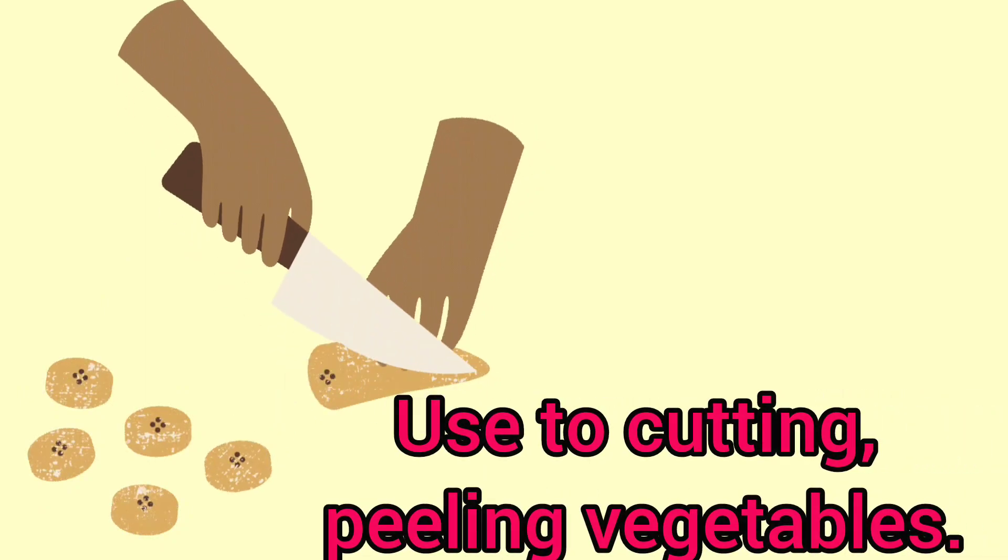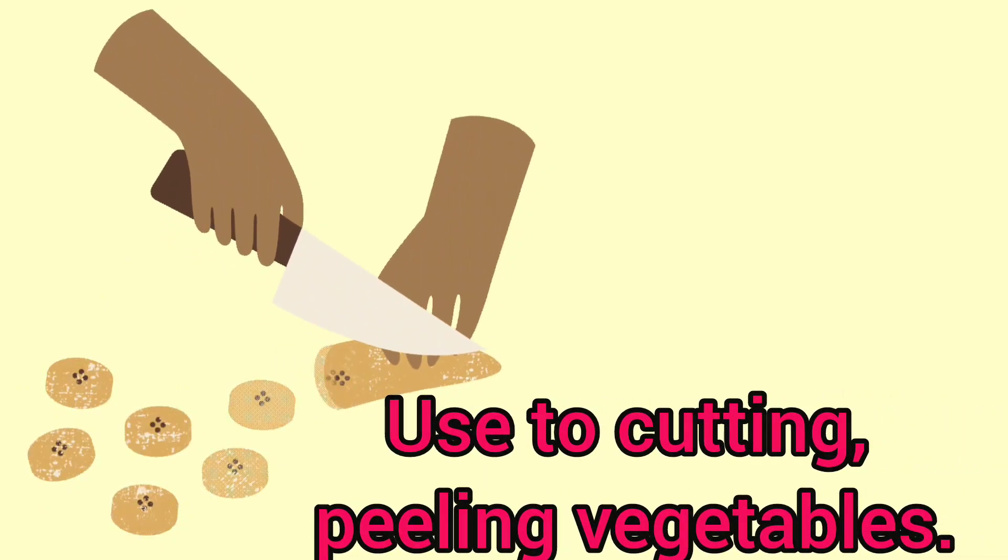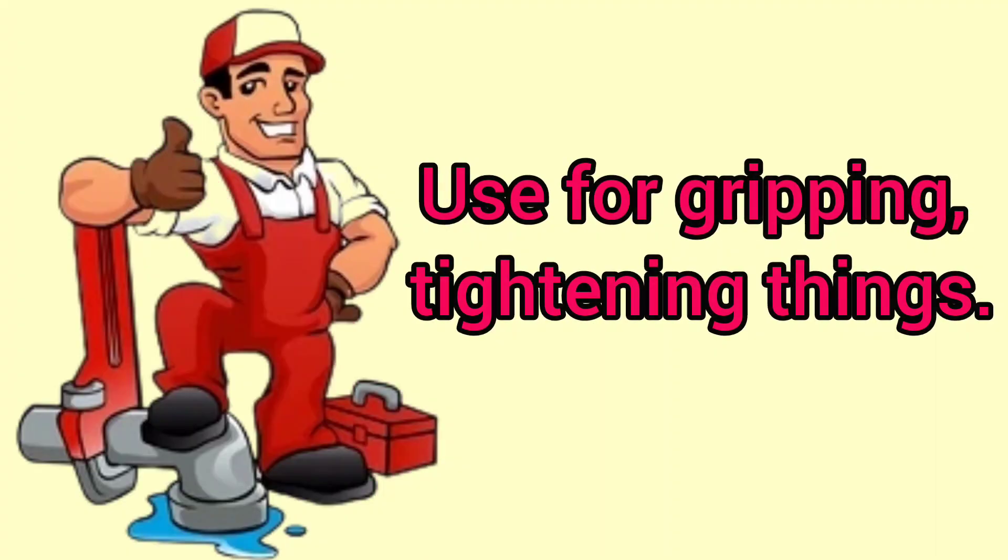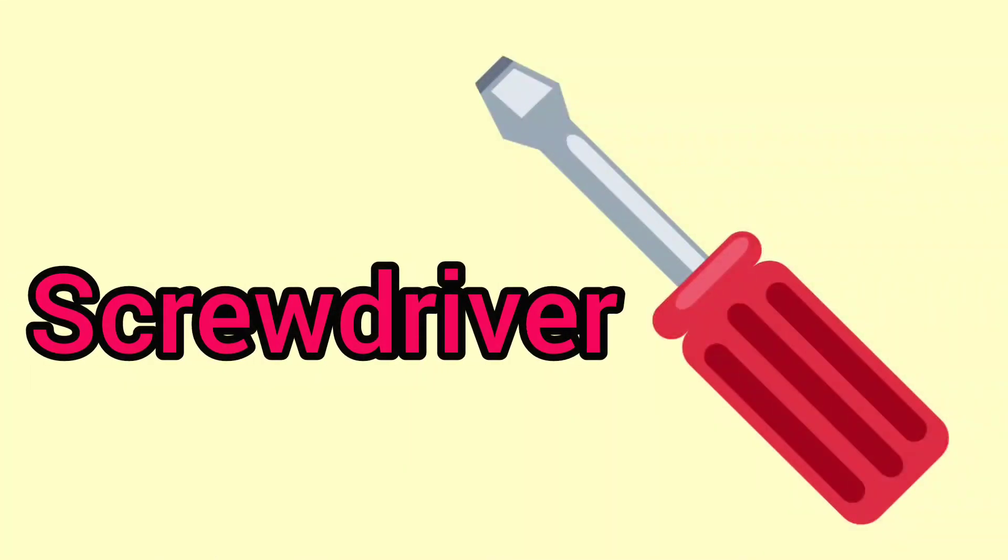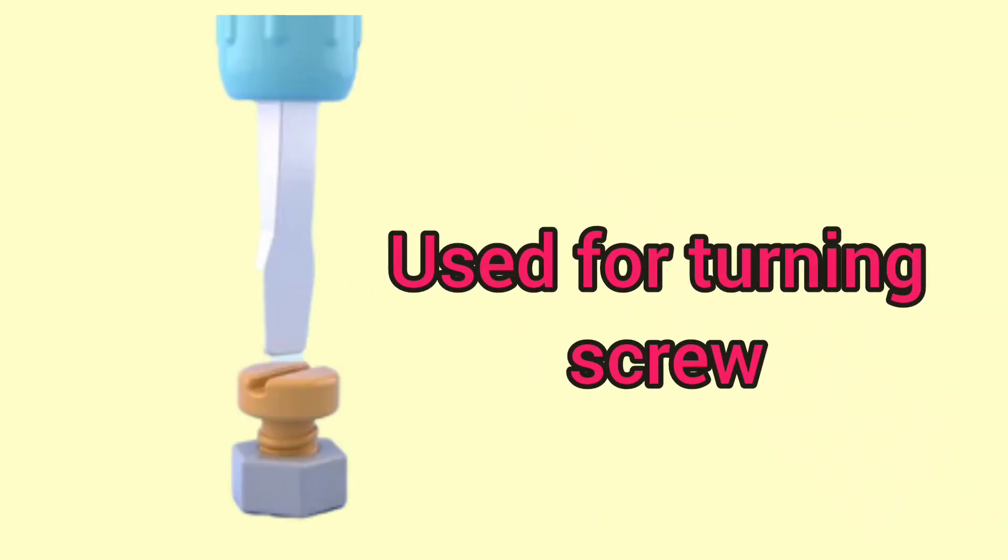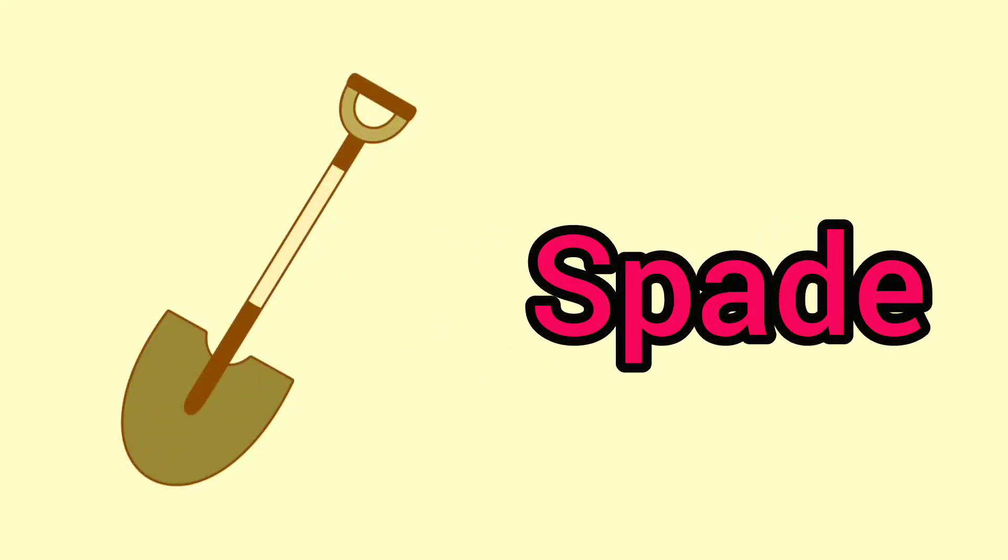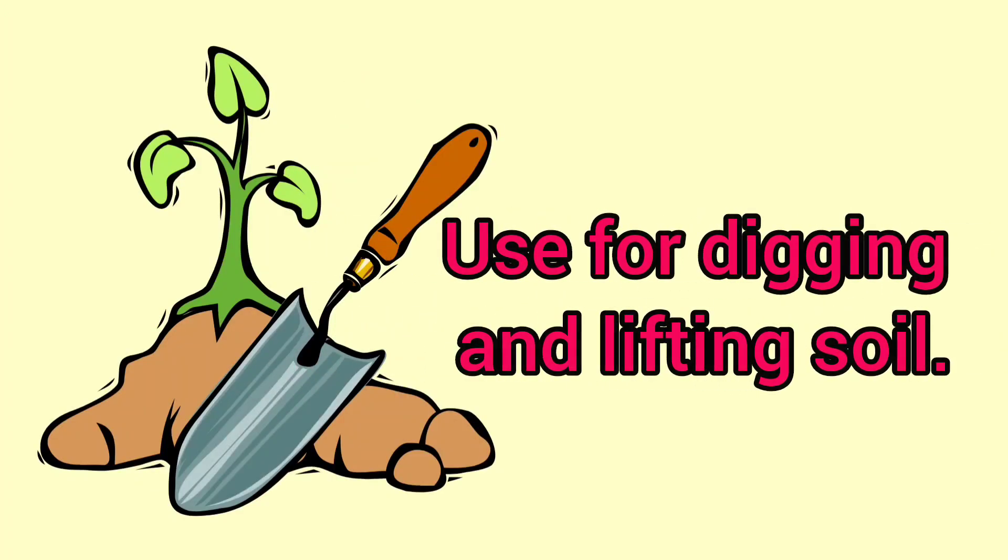for cutting and peeling vegetables. Wrench: wrench is used for gripping and tightening things. Screwdriver: screwdriver is used for turning screws. Spade: spade is used for digging and lifting soil.